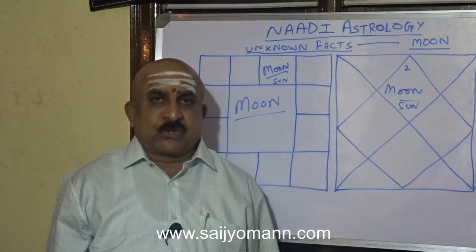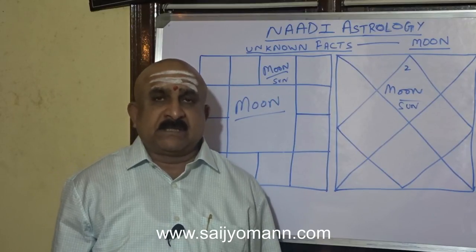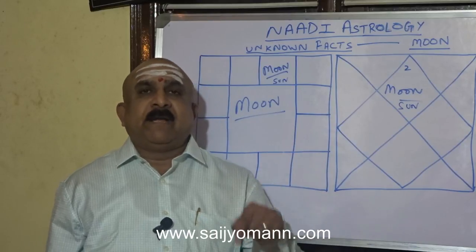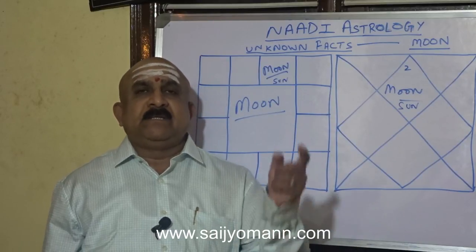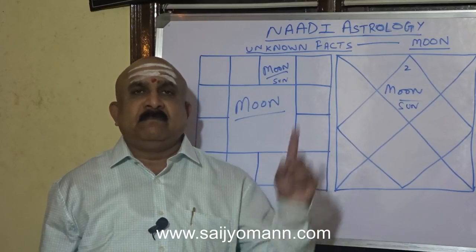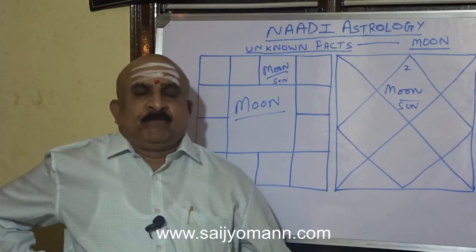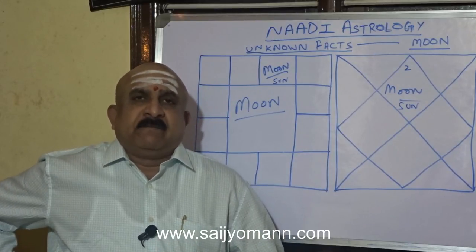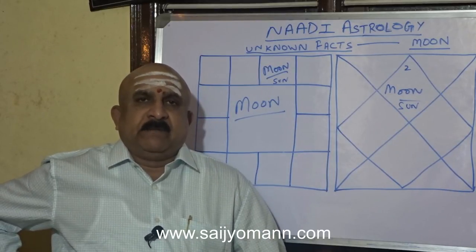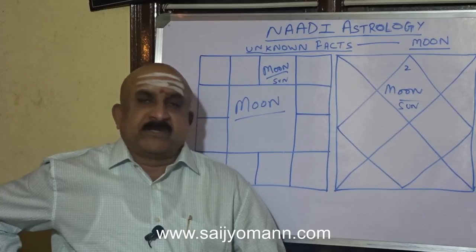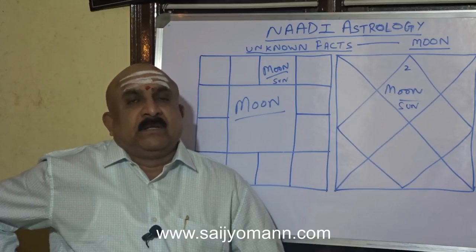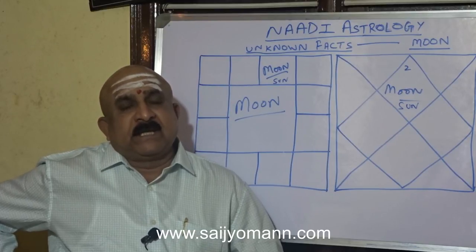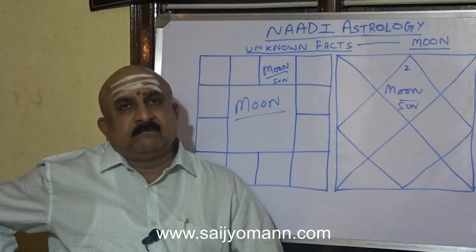When Sun is there with Moon, Moon's qualities will be strong because Sun is the kingly planet, so the family is ruled by Moon — the mother. The native's mother will be taking charge of the complete family affairs.